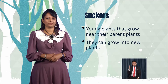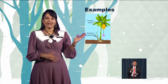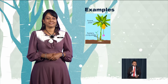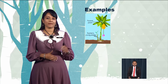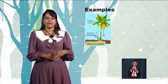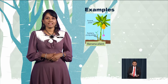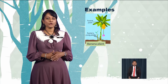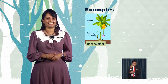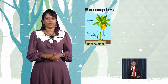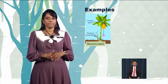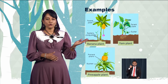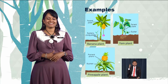Look at this picture — what is the name of this plant? That's correct, it is a banana plant. The banana plant is a good example of a plant that reproduces through suckers. Other than banana, the pineapple plant also reproduces through suckers.